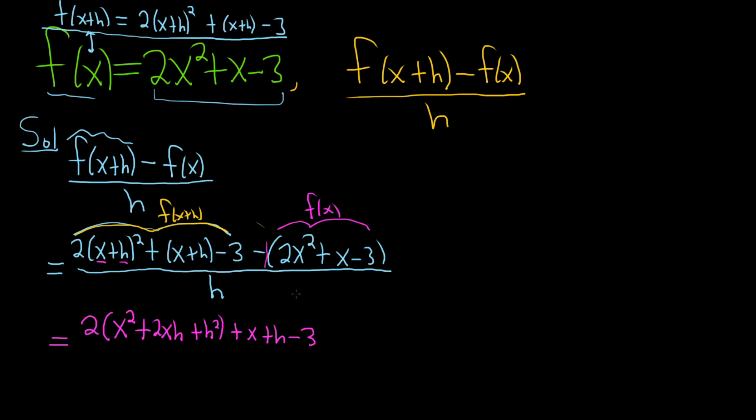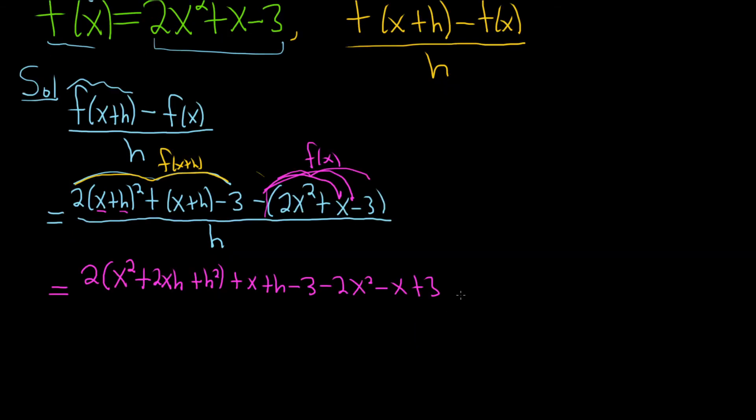And then plus x plus h minus 3. And then distribute this negative 1 minus 2x squared. And then negative 1 times x is minus x. Negative 1 times negative 3 is plus 3. So it's really long. It's all being divided by h. So this is equal to.